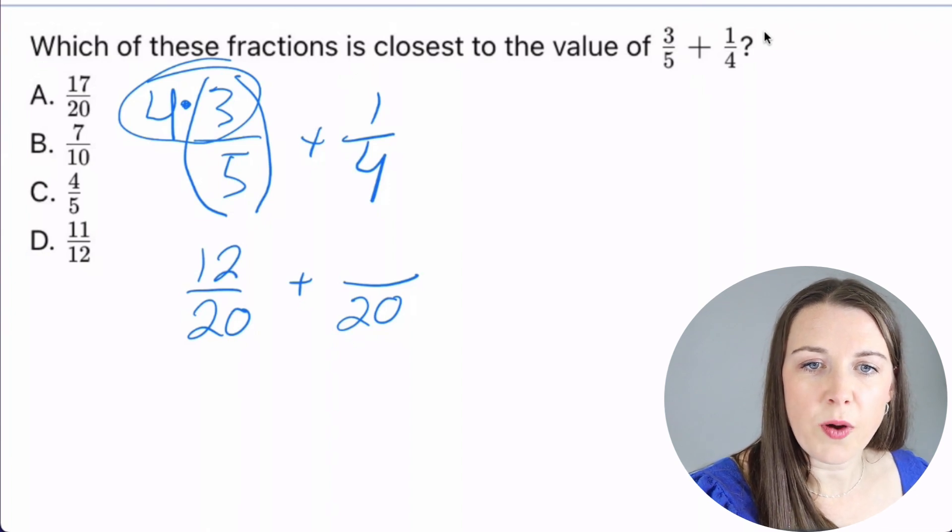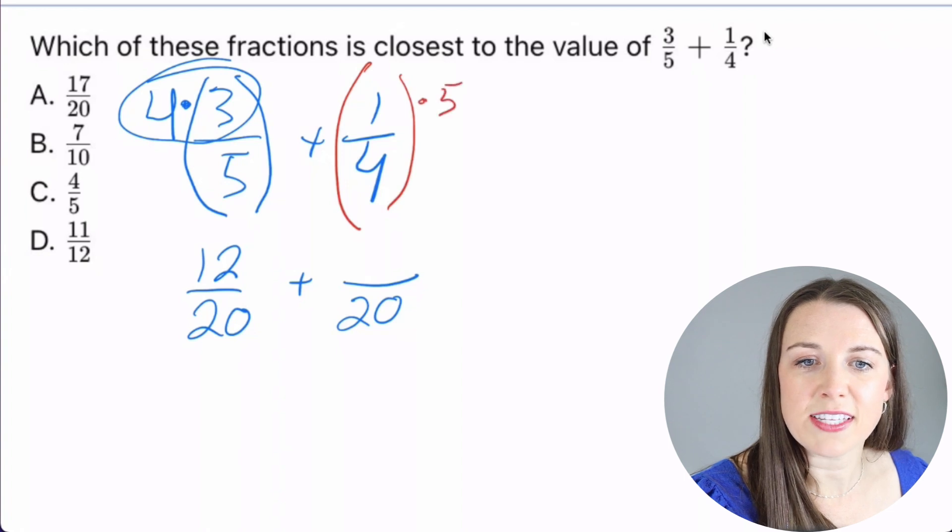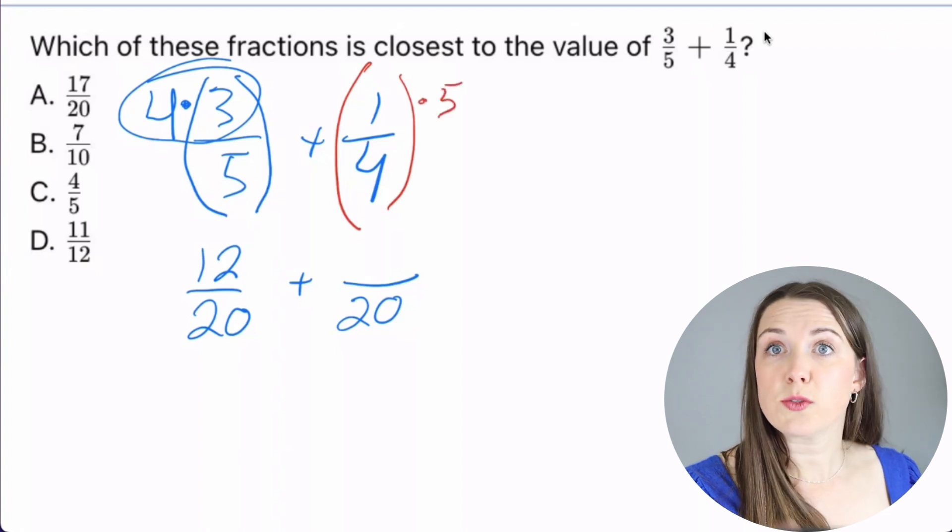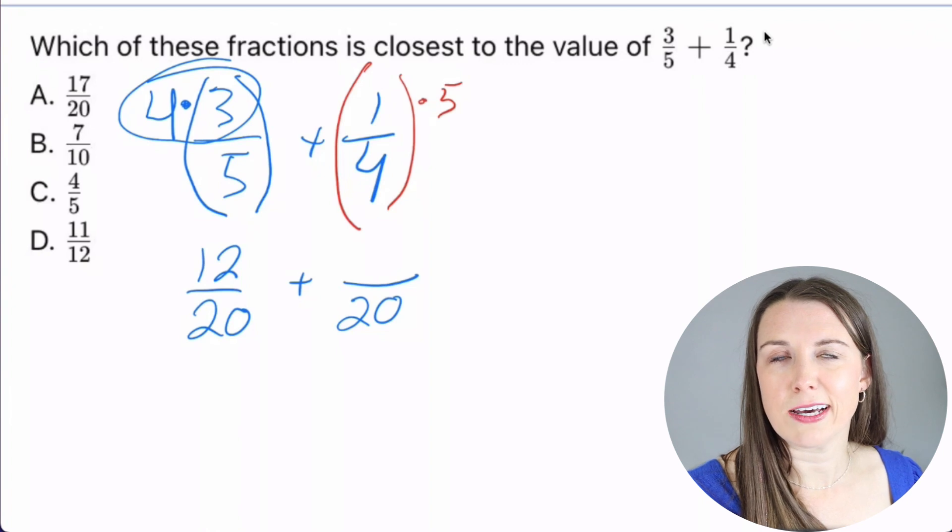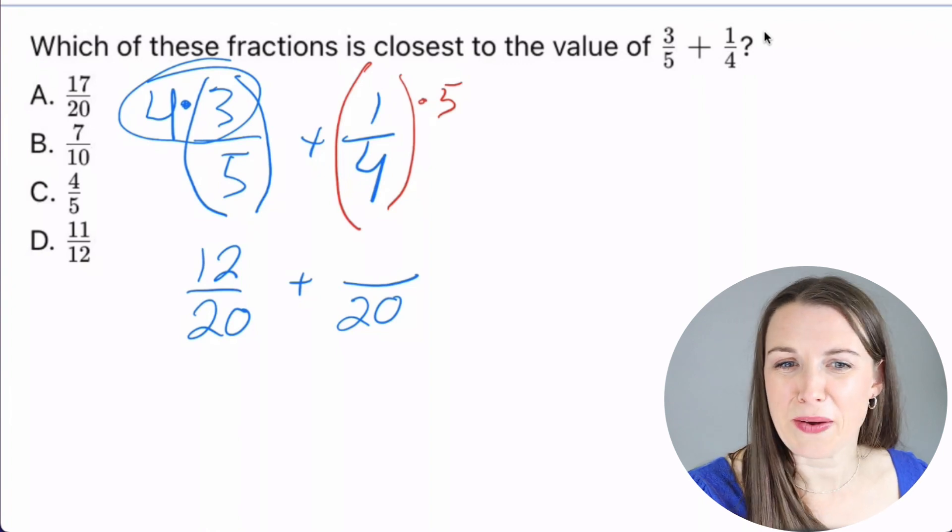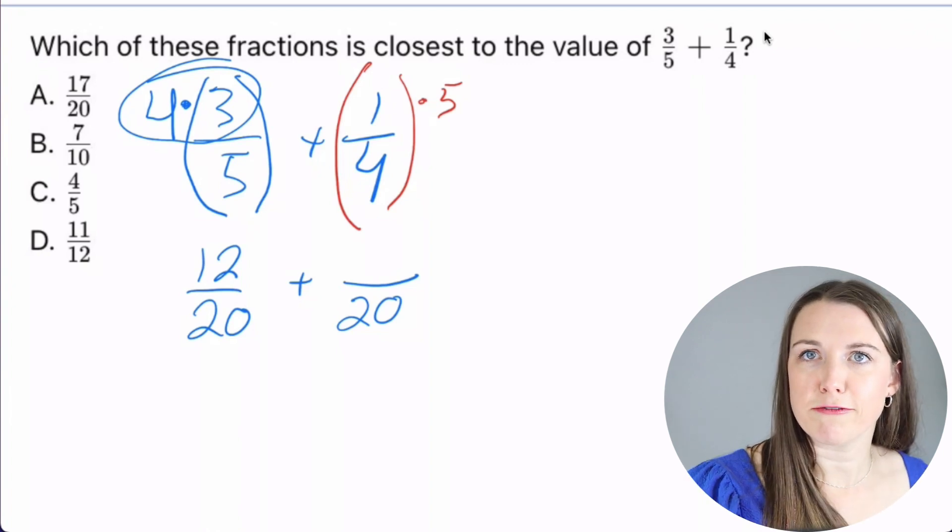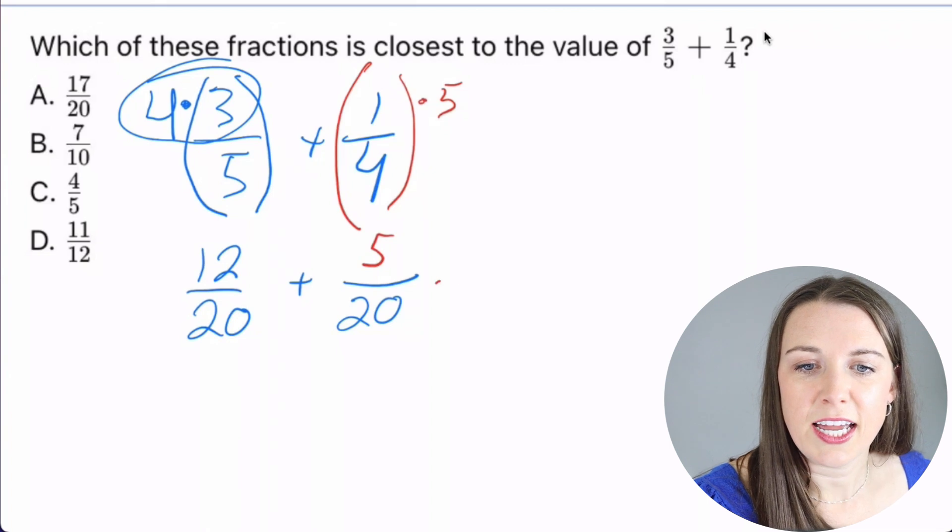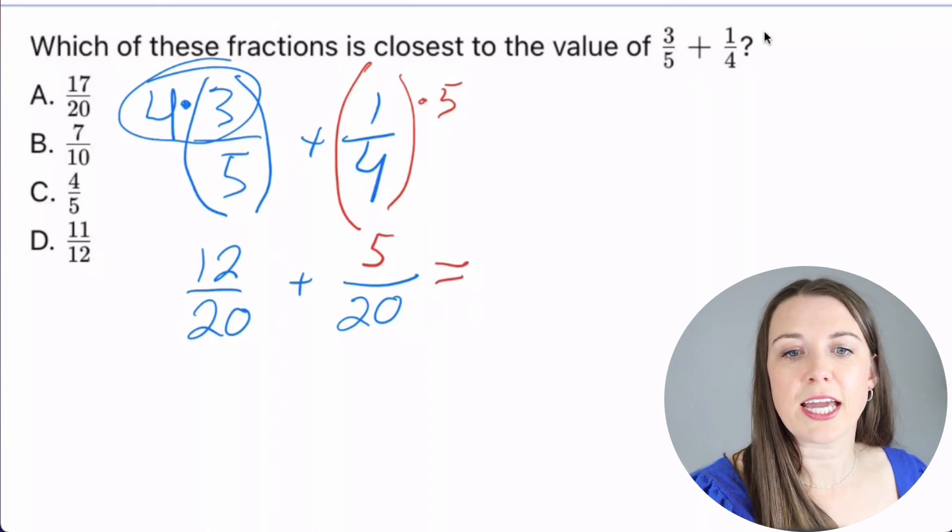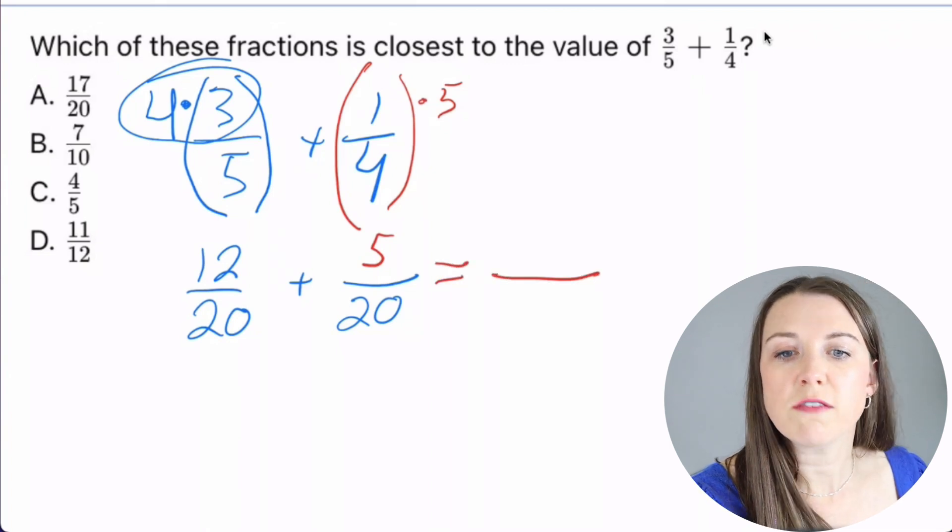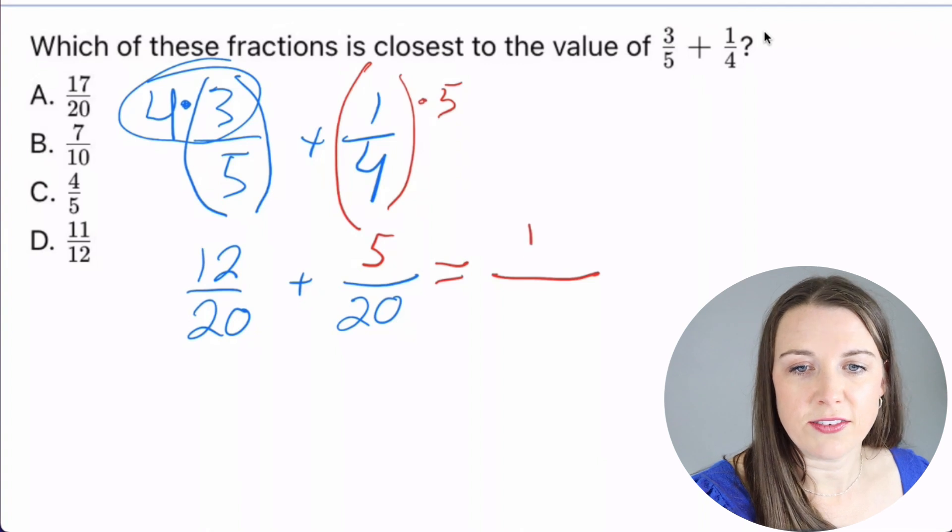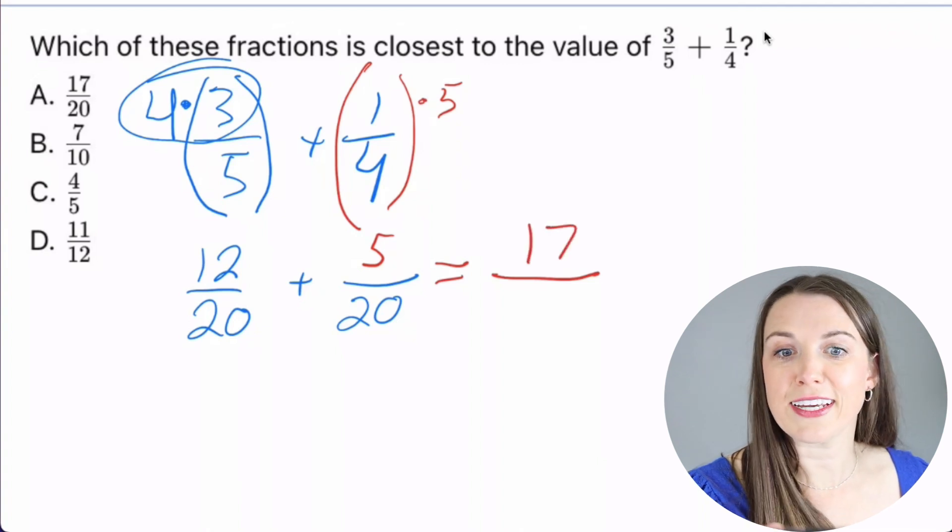And then this part right here, I'm going to multiply that by 5. Because I know that 4 times 5 is what gives me 20, the number on the bottom, that denominator. Okay. So what is 1 times 5? 5. And now I just add the numbers together. So 12 + 5 is 17. And then I just keep the 20 on the bottom.